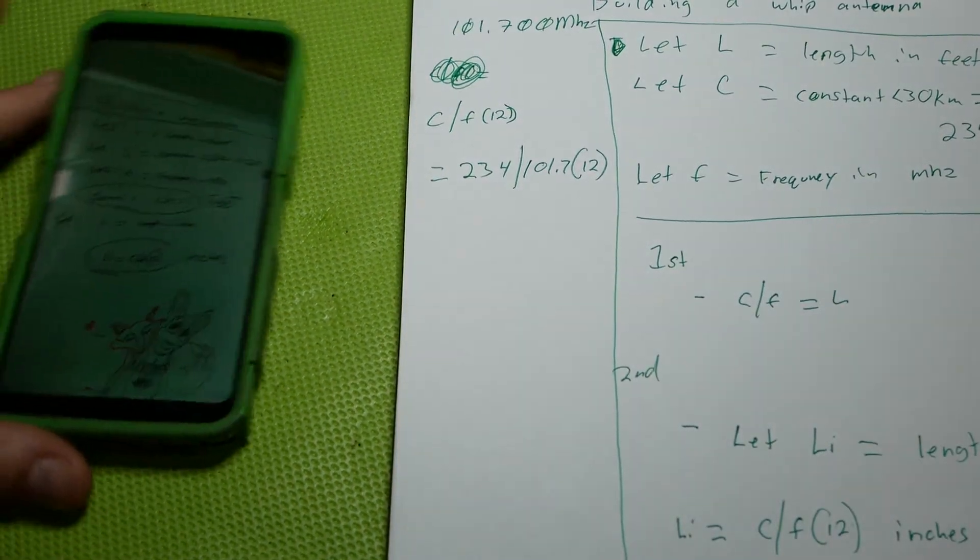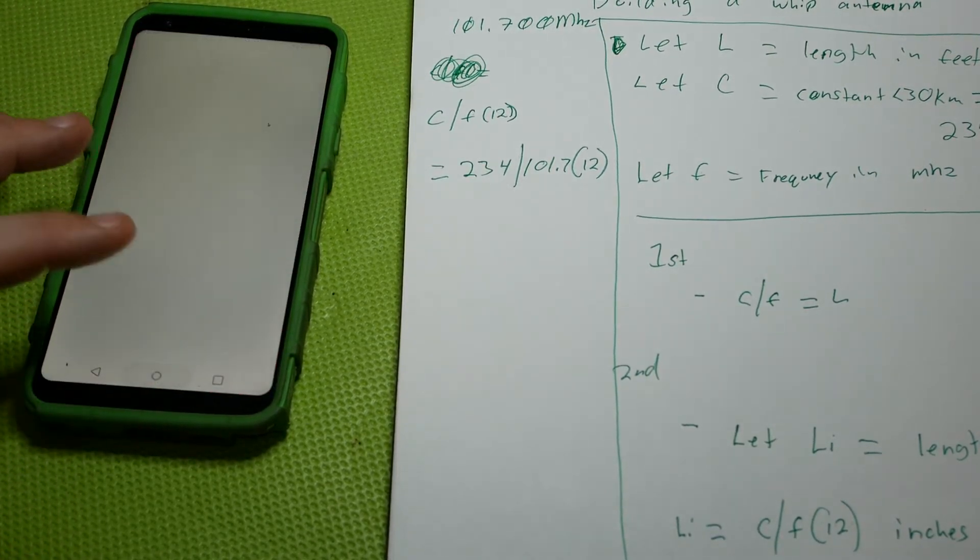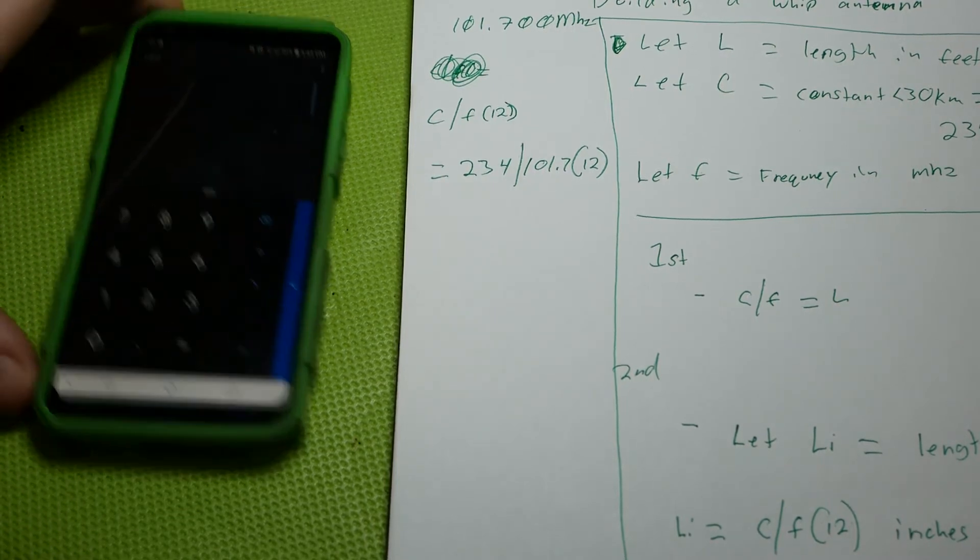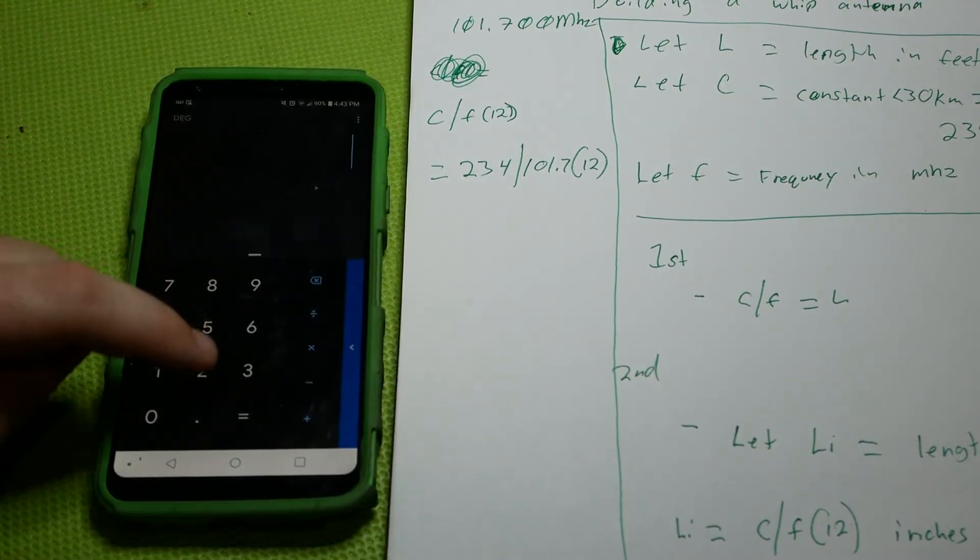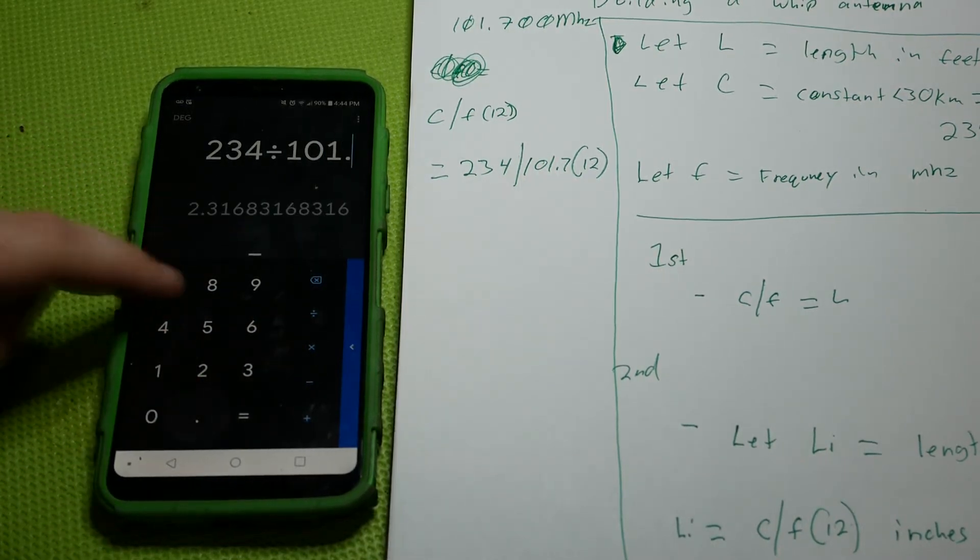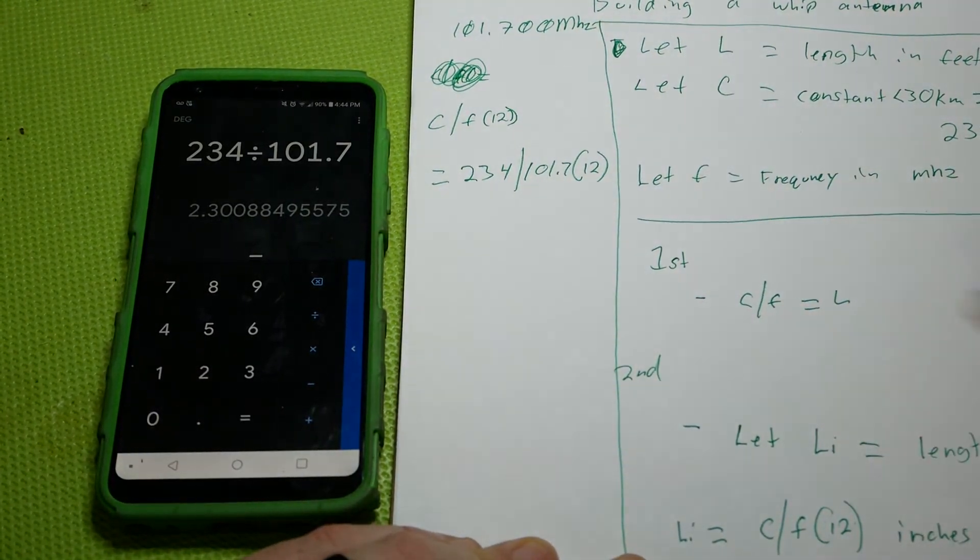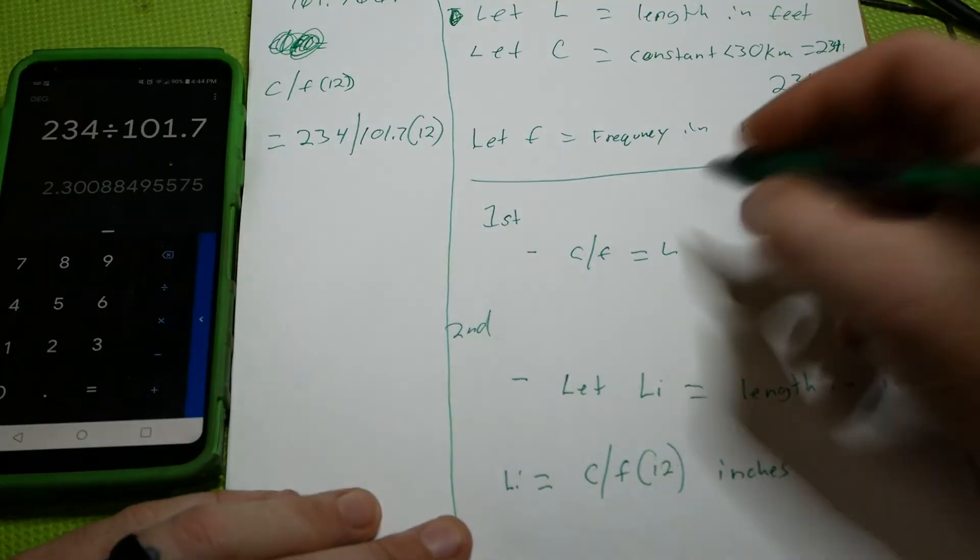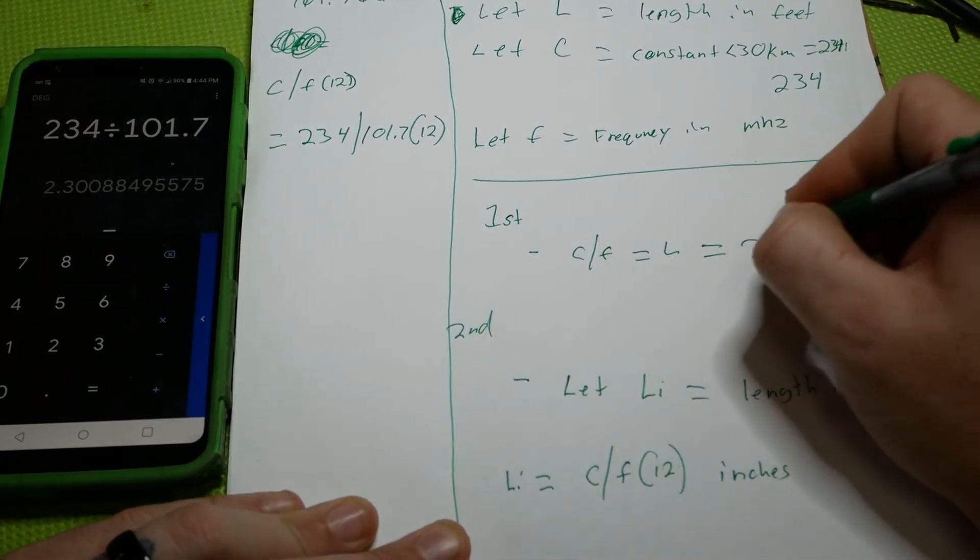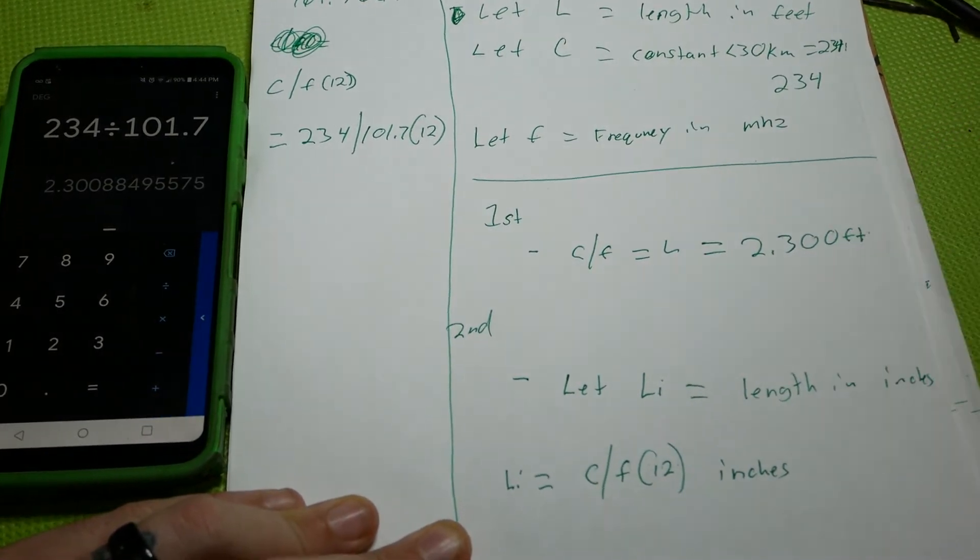If we were to go back to the very beginning and bring our calculator here and we do 234 divided by 101.7, that gives us, and we'll come over here for that. Our first formula is equal to 2.300 feet, right?